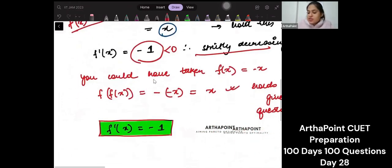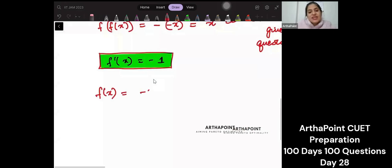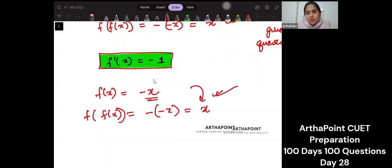Let's say I take the function as minus x. Then f of f of x will be, instead of x, put the function. Function was minus x, it will be x. It is also following the property given to you. What will be f dash x? Minus 1, less than 0, decreasing.